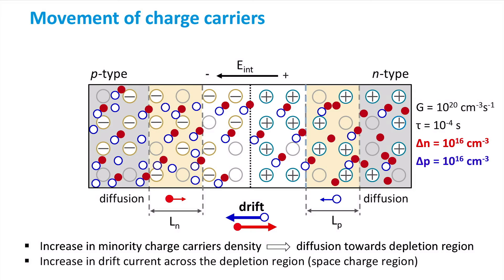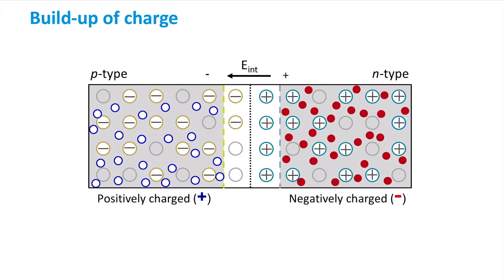Due to the enormous increase in minority charge carrier concentration, the drift current across the depletion region increases — electrons are pushed from the P-type to the N-type region and holes from the N-type to the P-type region. This drift current will not increase indefinitely but will reach a steady state. The collection of photogenerated minority carriers — where they become majority carriers — raises majority carrier concentration above equilibrium, and the system tends to return to its original state, so diffusion of majority carriers eventually balances the increased drift.